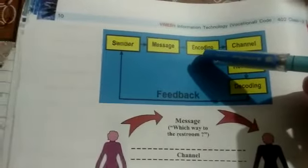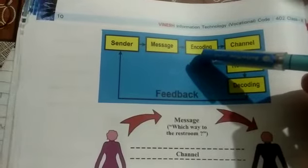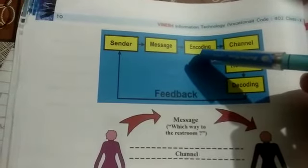Next, the third element is encoding. Encoding is a process of converting the masses to be transmitted into symbols.